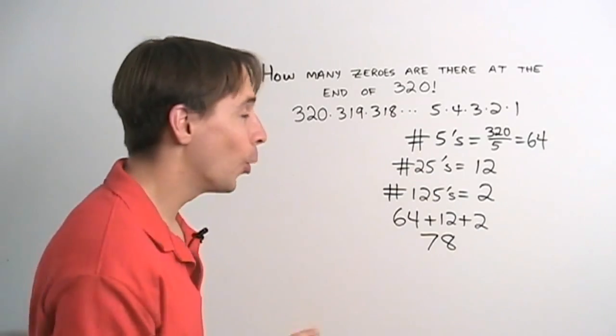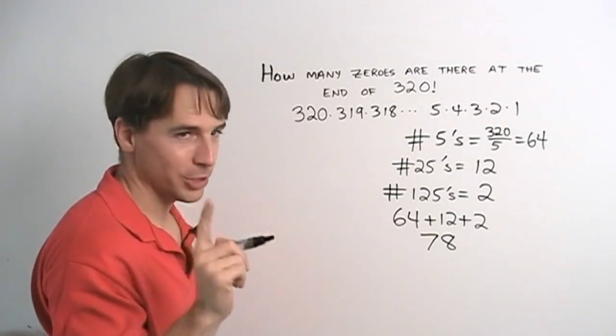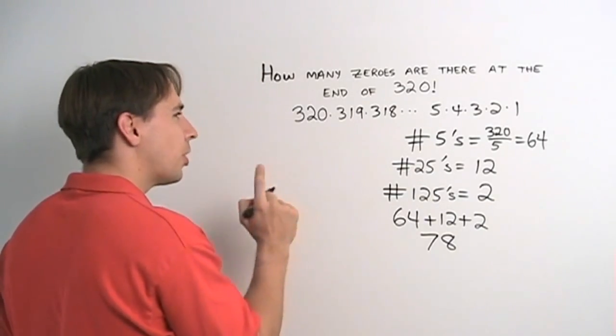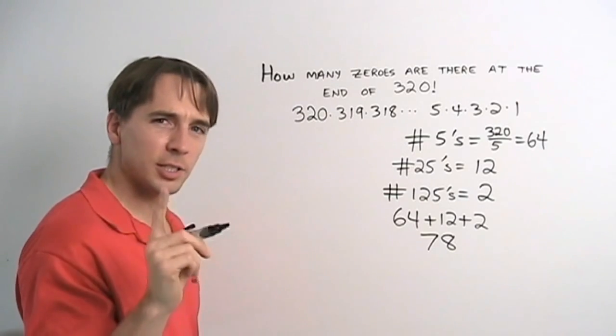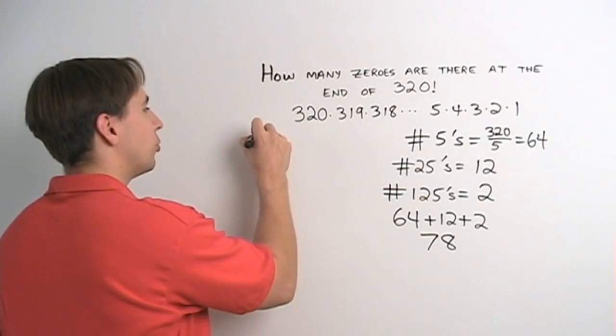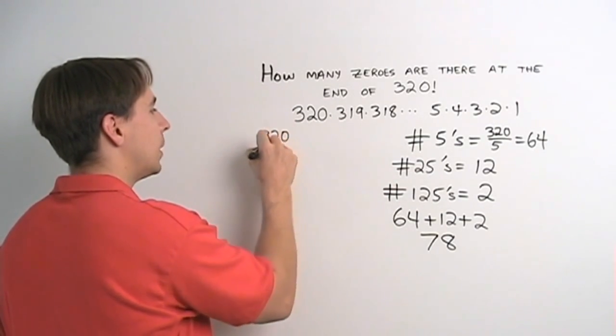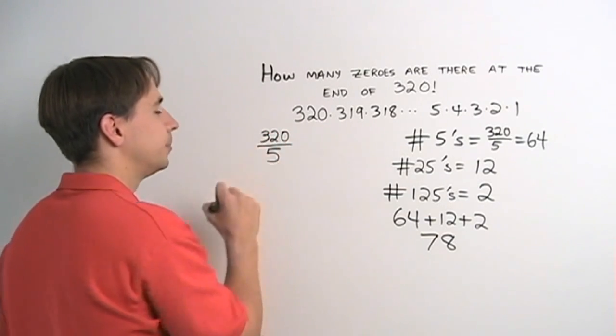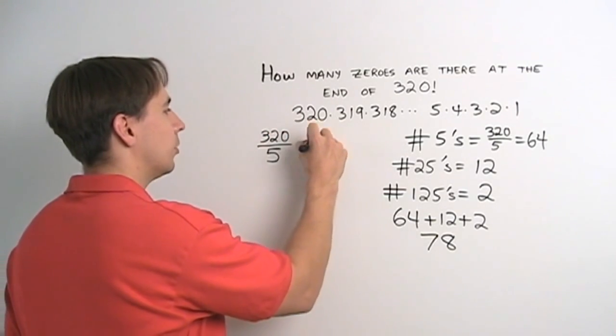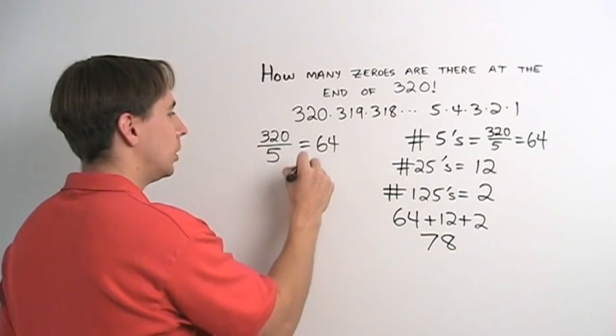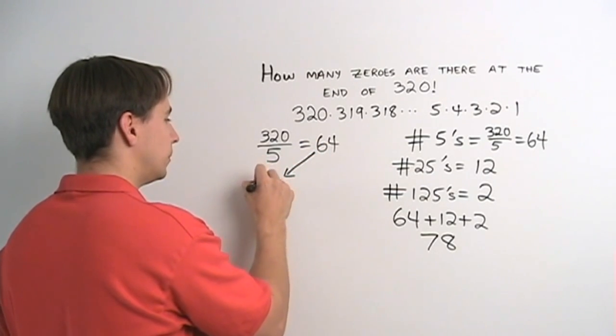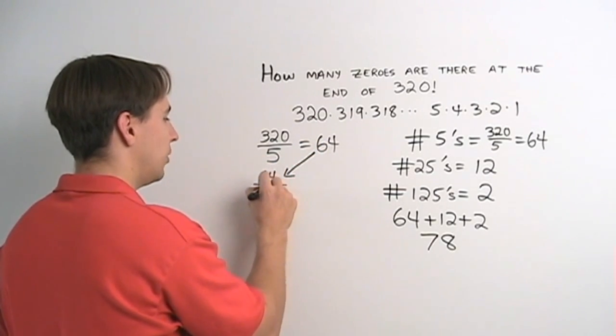But wait, there's more. Not more zeros. There's more to this problem. Let me show you a slicker way to do it. Take the 320 and divide by 5. And that gives us 64.